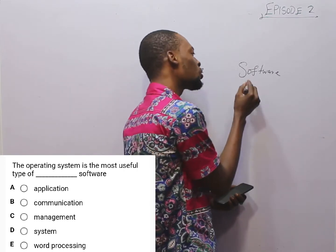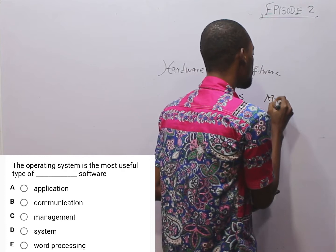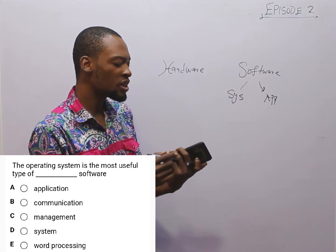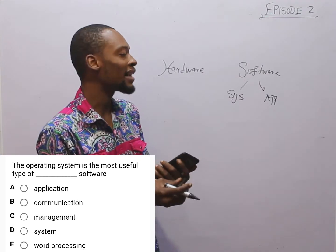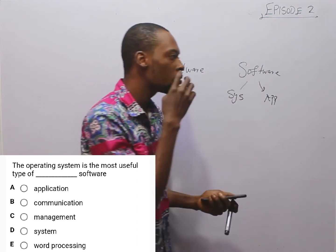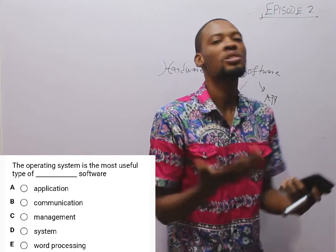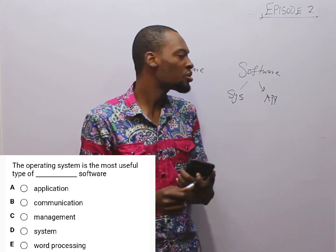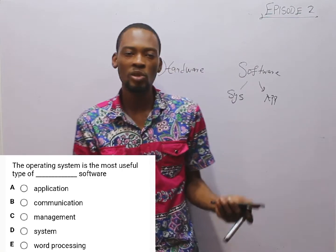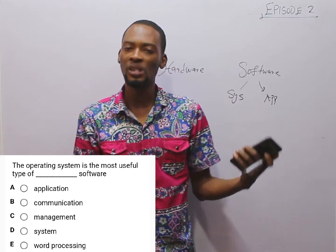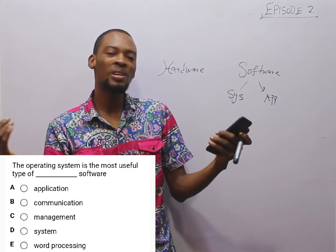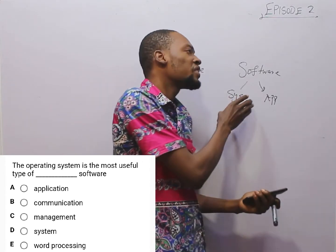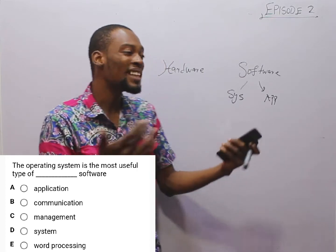Software is divided into system software and application software. You can call application software 'apps.' They don't necessarily come with the computer and the computer can work without them. For example, if you have a phone, you can choose to install Facebook or not, Instagram or not, a game or not — those are application software, the apps you can install or uninstall. They are not a core part of the system. But system software — they are programs the computer requires to run.